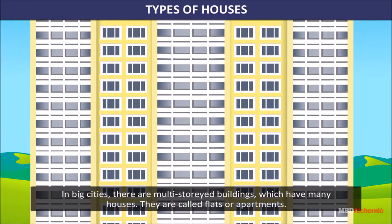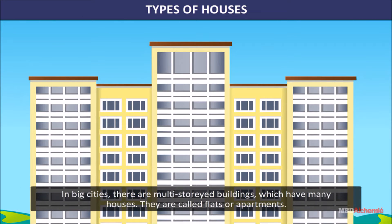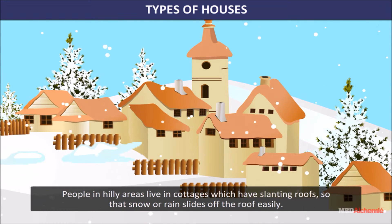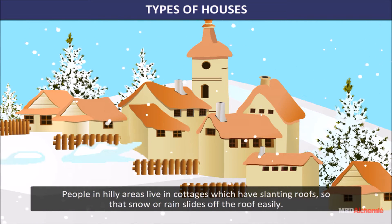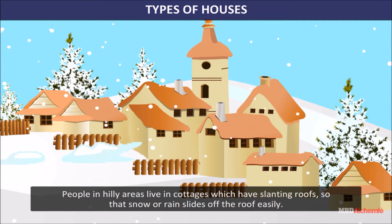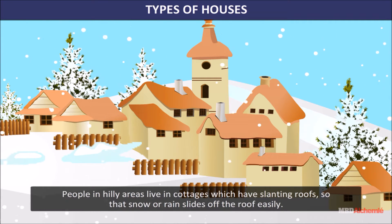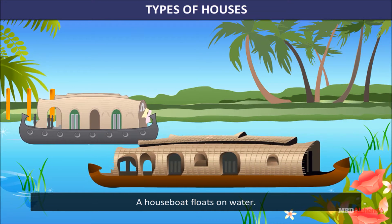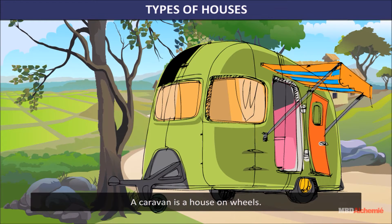Types of houses: In big cities there are multi-storey buildings which have many houses; they are called flats or apartments. Big houses known as bungalows can also be seen in cities. People in hilly areas live in cottages which have slanting roofs so that snow or rain slides off easily. A houseboat floats on water, and a caravan is a house on wheels.